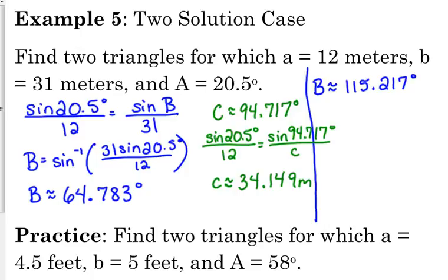So cross multiply 12 sine of our answer divided by the sine of 20.5 gives us that side C is approximately 34.149 meters. So that is one possible triangle. And as always, you should check and make sure that the angles and sides match up. So smallest side, smallest angle. That works 12 and 20.5. Our next biggest angle was 64.783. That went with the side of 31. So that means our third side should be bigger than 31, and it was 34.149. And that means our biggest angle was 94.717. So that's one possible triangle that comes out of this scenario.